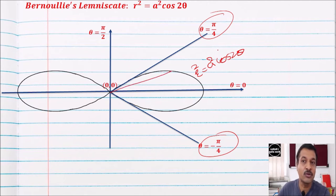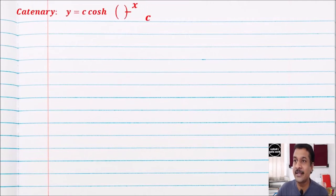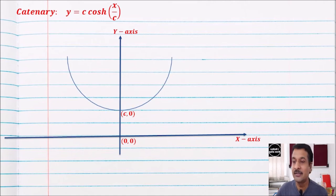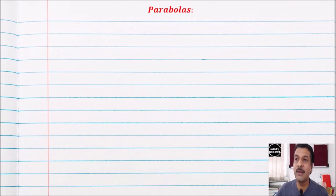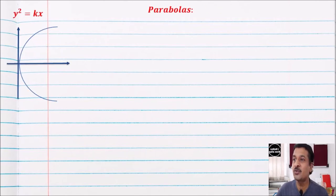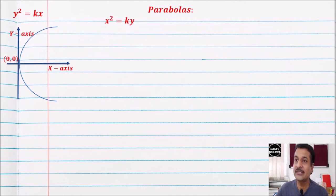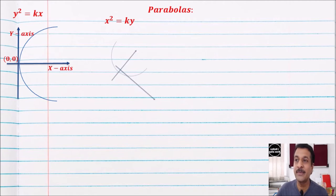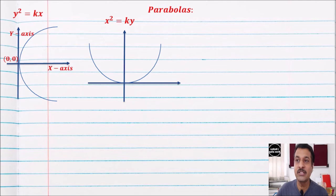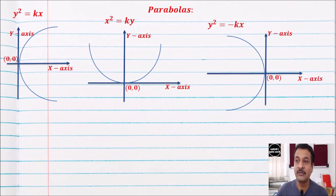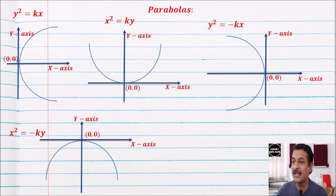The next curve is the catenary: y = c cosh(x/c). Its shape is just like a parabola, starting from (c, 0). Remember the parabolas: y² = kx is symmetric about the x-axis along the positive x-axis; x² = ky is symmetric about the y-axis along the positive y-axis; y² = −kx is symmetric about the x-axis along the negative x-axis; and x² = −ky is symmetric about the y-axis along the negative y-axis.